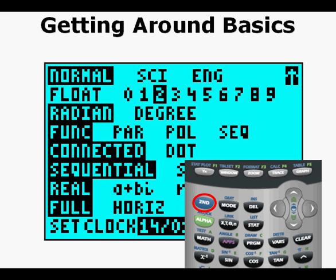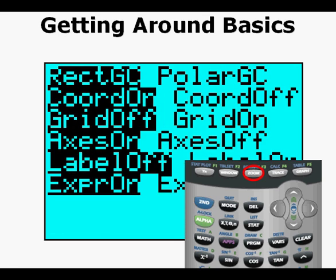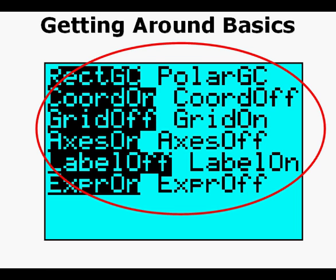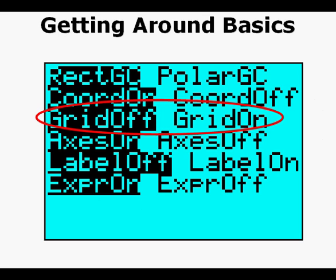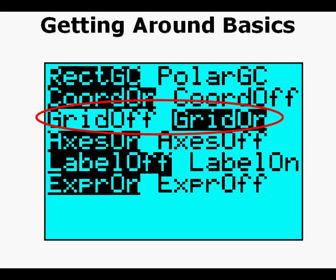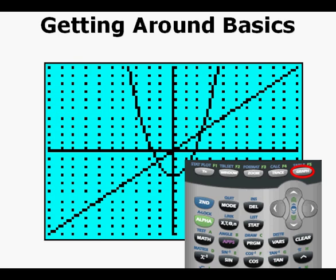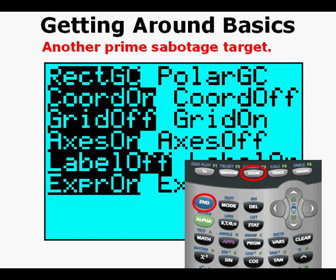We'll now go someplace else, the format menu. Press second then the zoom key which accesses the format view. The word format is just above the zoom key. These attributes determine attributes of your graph view. This feature grid on this line produces dots on your graphing view screen to make it look more like graph paper. Here's grid on highlighted. Just arrow over to it and press enter. Press graph. Here we see the dots that make the view screen more like gridded electronic graph paper. Now back to the format view. We press second then zoom with the word format above it. This view is another prime sabotage target. Here a person can really make things look strange so just something to watch out for.